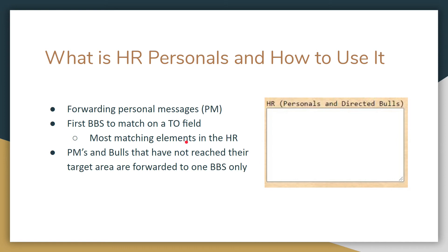Private messages and bulletins that have not reached their target area are forwarded to only one BBS. So if WW is in here and it's forwarded to one station, it won't go to the next station — another BBS won't be listed on your system. It's only going to forward one time. That's why I don't use directed bulletins in the personal section.